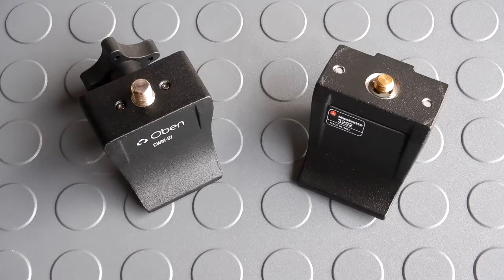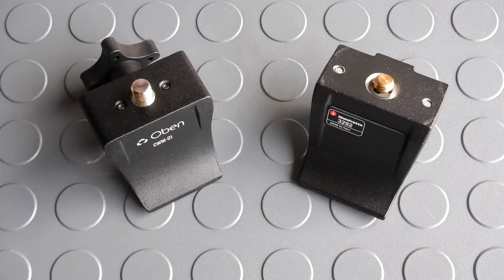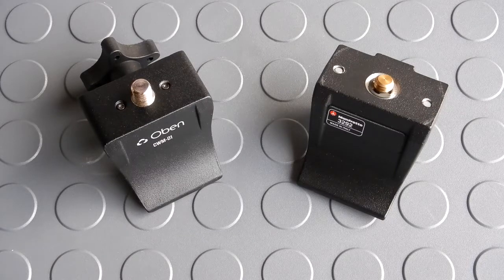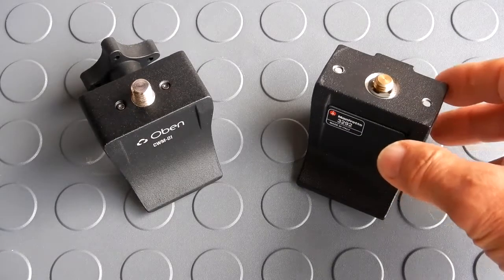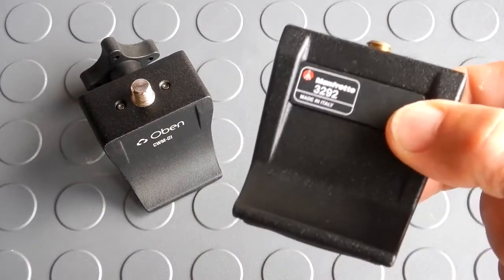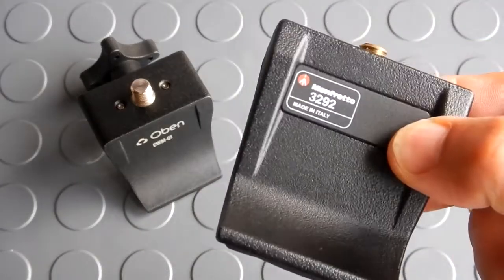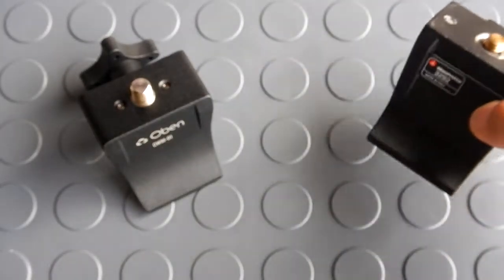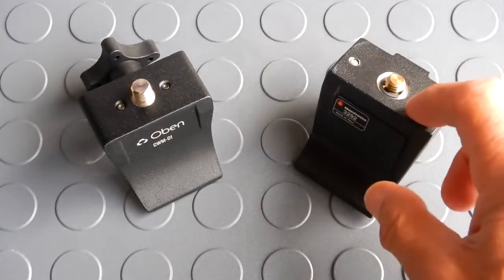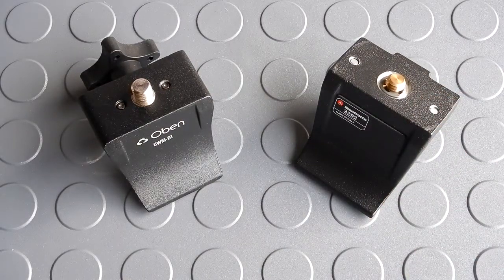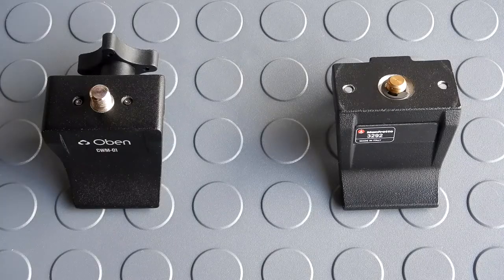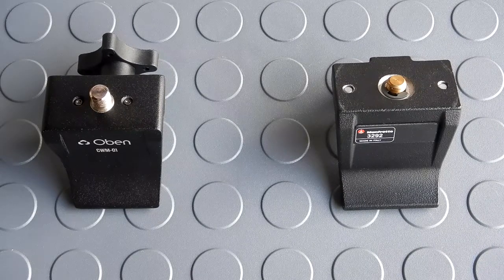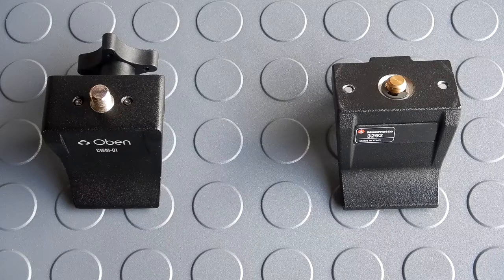the Manfrotto 3292. Now they've replaced that with what they call the 243 which looks exactly the same but they call it their car window pod. Does the same thing and I've had this for some time. They both do the same thing - they've got a couple different ways of going about it.